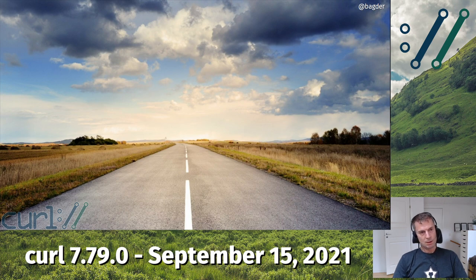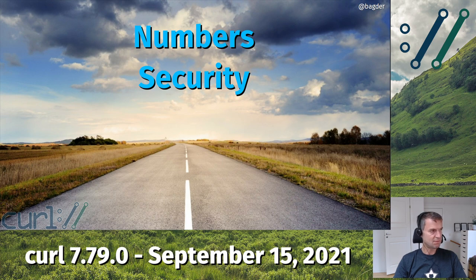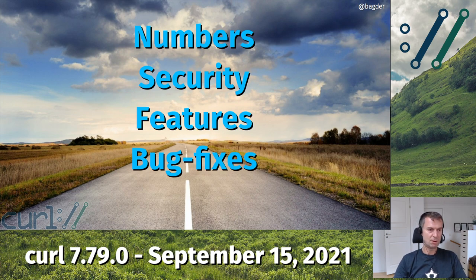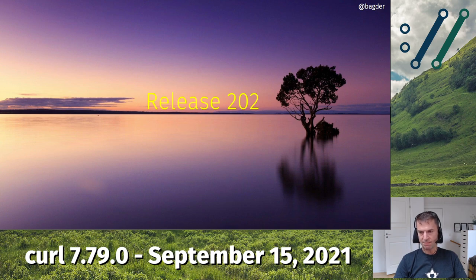Today I'm going to do a little presentation and talk about what's new and what's changed in this version: some numbers about the release, some security advisories - three this time - some new features and changes, and some notable bug fixes. Also something about what's coming up next. This is release 202, counting from March 20, 1998, which was the first curl release - we called that curl 4.0.